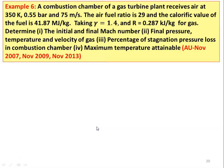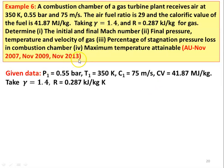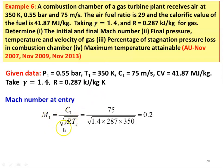Example number 6: A combustion chamber of a gas turbine plant receives air at 350 Kelvin, 0.55 bar, and 75 m/s. The air-fuel ratio is 29 and the calorific value of the fuel is 41.87 MJ/kg. Take gamma=1.4, R=0.287 kJ/kg·K. Determine the initial and final Mach numbers, final pressure, temperature and velocity, percentage stagnation pressure loss, and maximum temperature attainable. This is from November 2007, November 2009, and November 2017 question papers. M1 = 75/√(1.4×287×350) = 0.2.